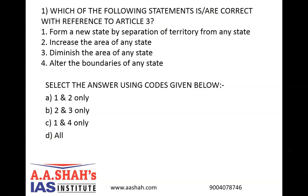Question number 1. Which of the following statements is or are correct with reference to Article 3? 1. Form a new state by separation of territory from any state. 2. Increase the area of any state. 3. Diminish the area of any state. 4. Alter the boundaries of any state. Select the answer using the codes given below: A) 1 and 2 only, B) 2 and 3 only, C) 1 and 4 only, or D) All.